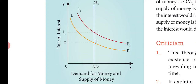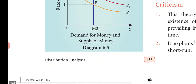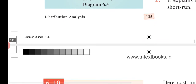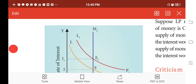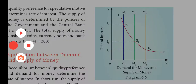When LP increases, the rate of interest increases. When money supply increases, the rate of interest changes accordingly. That is shown in the diagram.